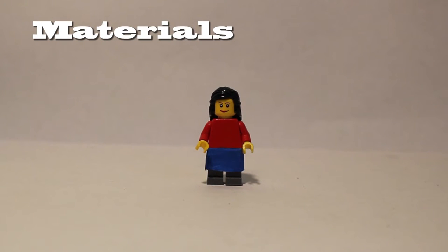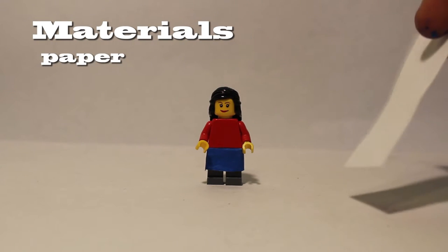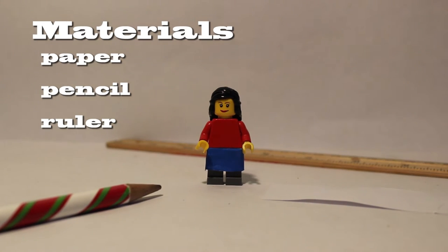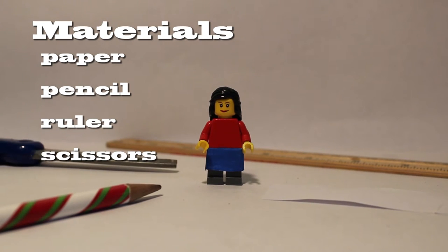Alright, so here's your list of materials. And this is everything that you need for the basics. Not necessarily the entire project. So what you need is paper, obviously, like printed paper, blank on both sides. Then you're going to need a pencil. You're also going to need a ruler. And a pair of scissors. So that's all you need, including a minifigure body, obviously.